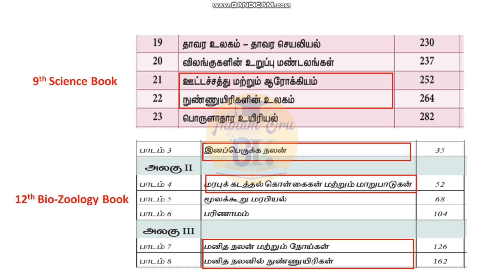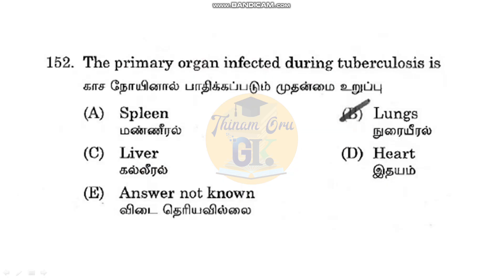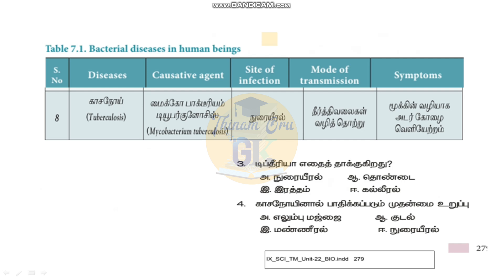In case of tuberculosis, TB affects the primary organ — the lungs, 100%. The site of infection is the lungs. The causative bacteria is Mycobacterium tuberculosis.